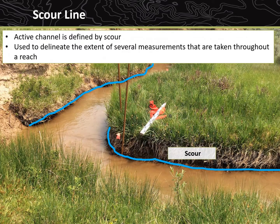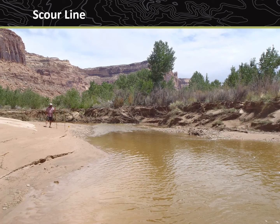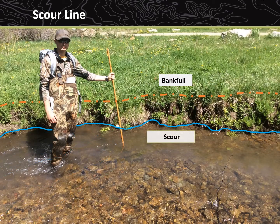The active channel is defined by a scour line. Identifying the scour line correctly is important because it is used to delineate the extent of several measurements taken throughout a reach. When sampling a stream, scour may be located above, at, or below the current water level. Scour line should be evaluated in a straight section of the stream. Scour is always below bankfull and is relatively consistent throughout the reach.